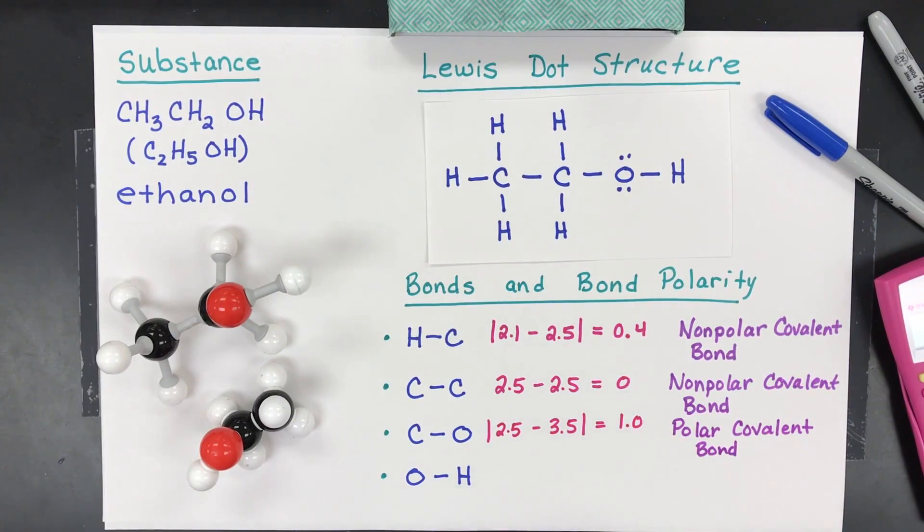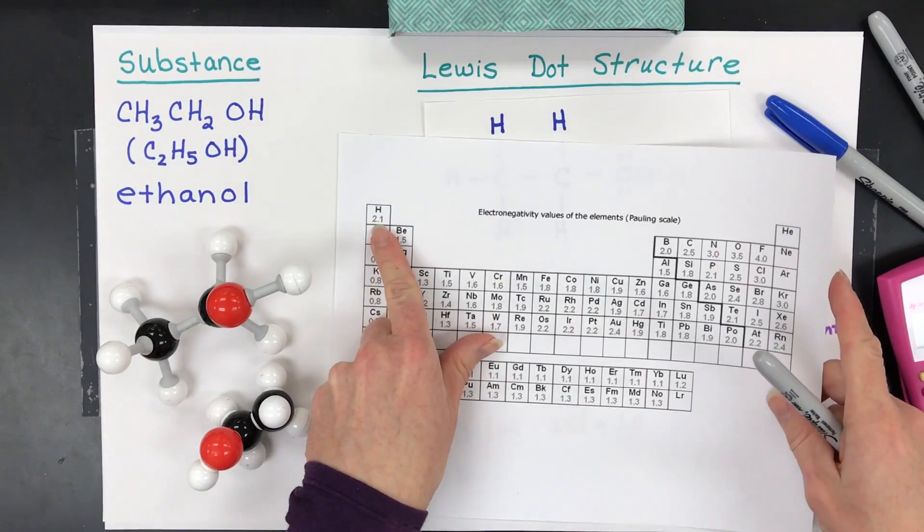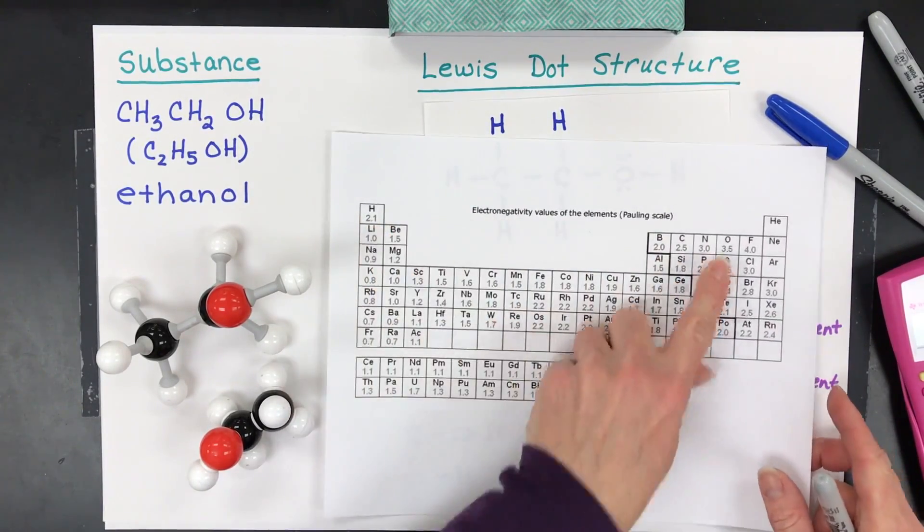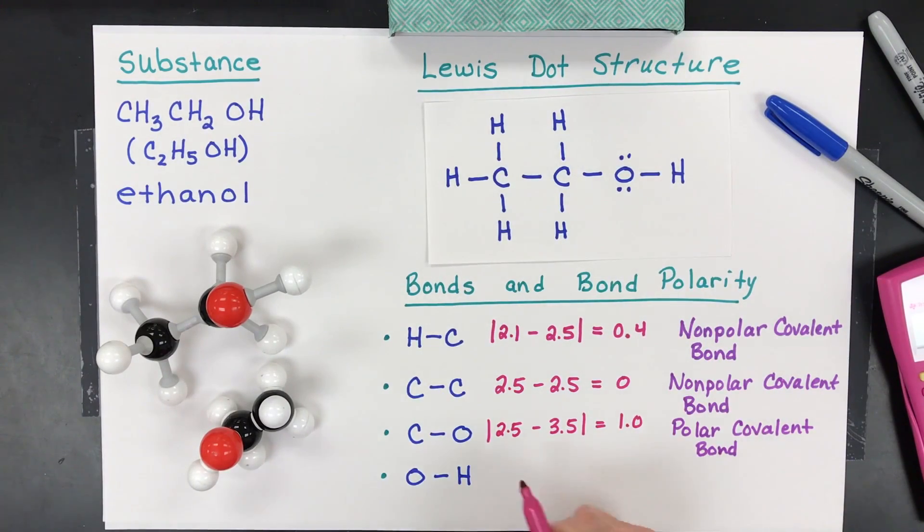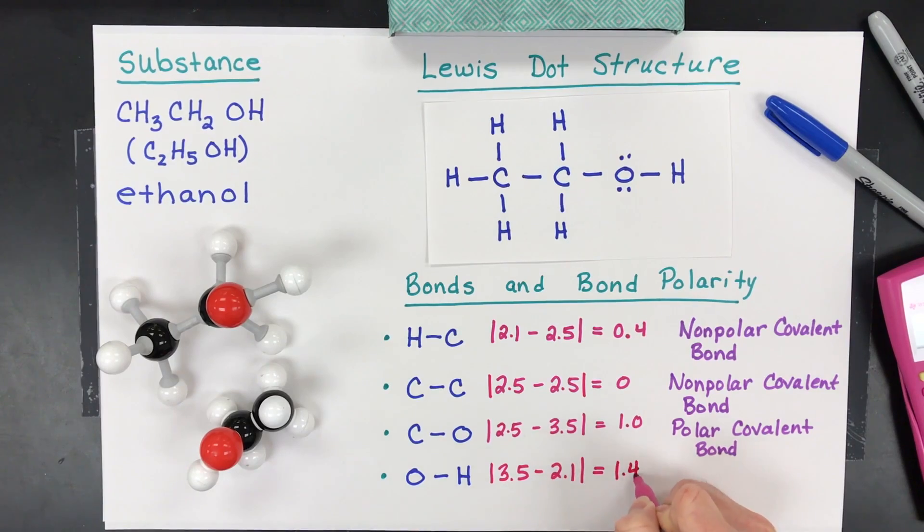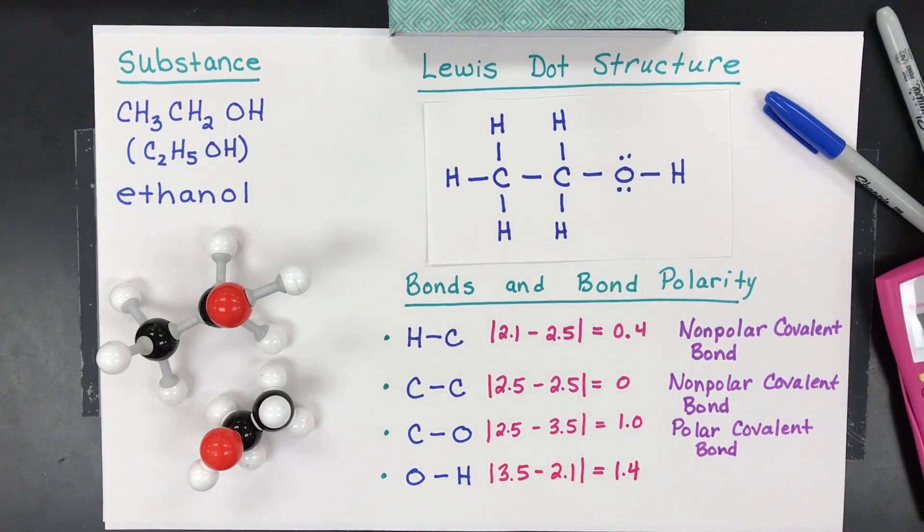Almost done. One more. Oxygen and hydrogen, at least for my example. So we've got oxygen and hydrogen, 3.5 and 2.1. We've seen those before. 3.5. We probably wouldn't even need the absolute value this time either, but I'm going to put it. In fact, you could put it every time. And so that ends up with the biggest difference, 1.4. Again, well within the cutoff, all nonmetals, polar covalent bond for the win.